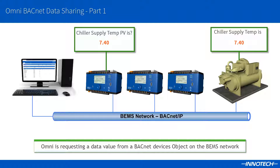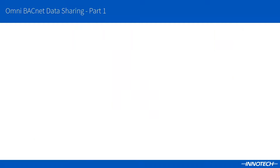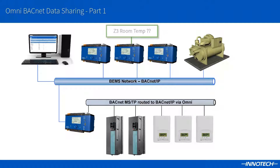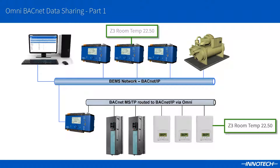There are many properties available for each BACnet object. Usually the most common property type used will be the object's present value, in this case the temperature value. The devices can also exist on a BACnet MSTP network segment that is routed back to the BACnet over IP network. We can target any device and its objects, as the network is seen as one BACnet over IP network.